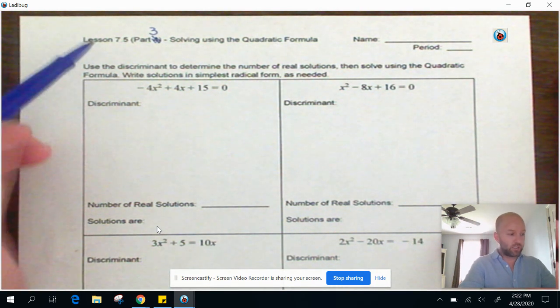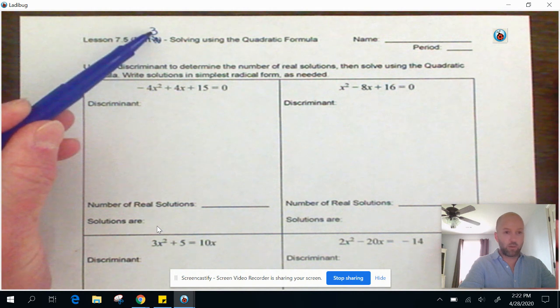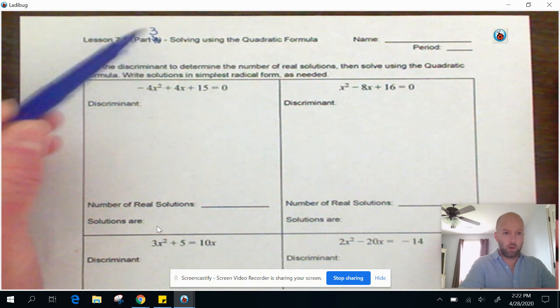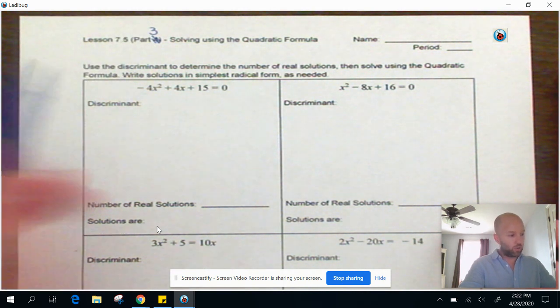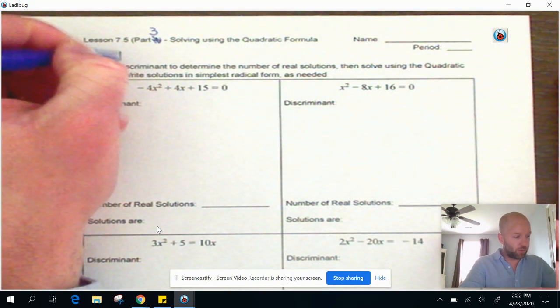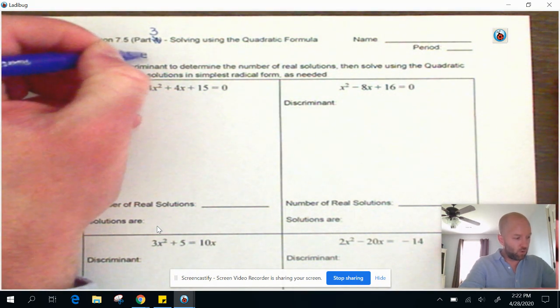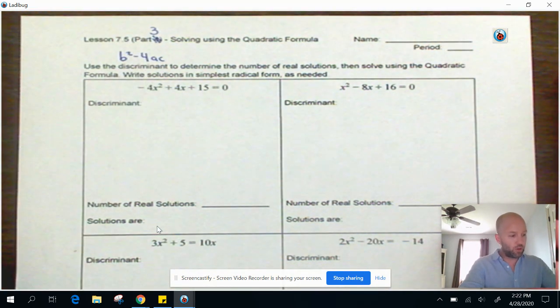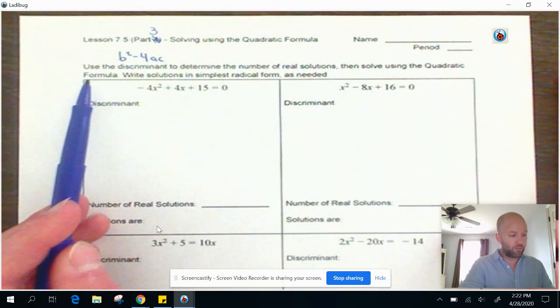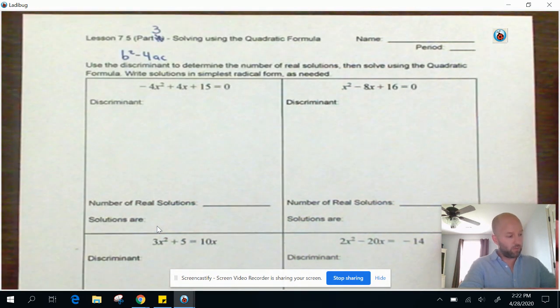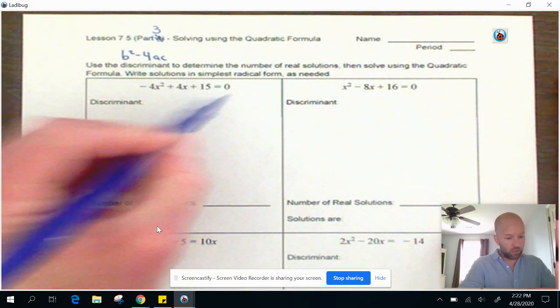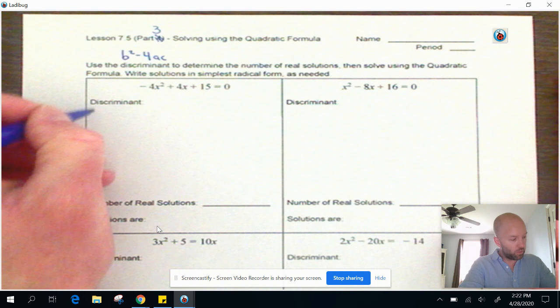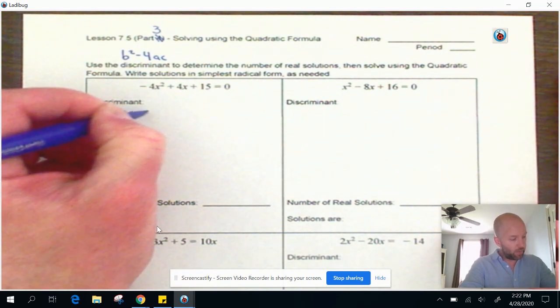All right, here we go. So this is more practice. We're on 7.5 part three. Notice I've scratched out the four. We're on part three for us. So we're going to use the discriminant. Remember the discriminant is B squared minus 4AC to determine the number of real solutions. And then we're going to use the quadratic formula to figure out what those solutions are. So first we need to take a look at this. We're going to dive straight into the discriminant, which is B squared minus 4AC.